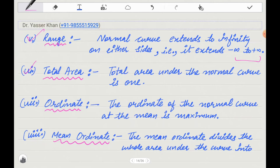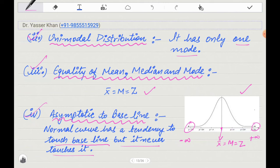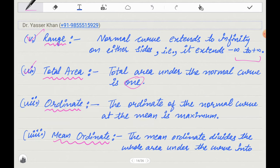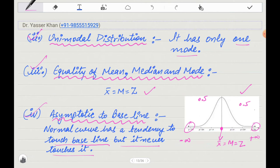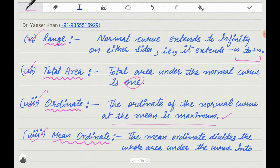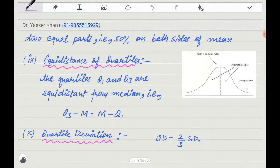The next point is the total area. The total area under the curve is one. How much is the area? 1, 0.5 here and 0.5 here, because there are two parts divided in half. The next point is the ordinates. The ordinates of the normal curve at the mean is maximum. The mean ordinates divides the whole curve in two equal parts, 50% is one side and 50% is the other side.